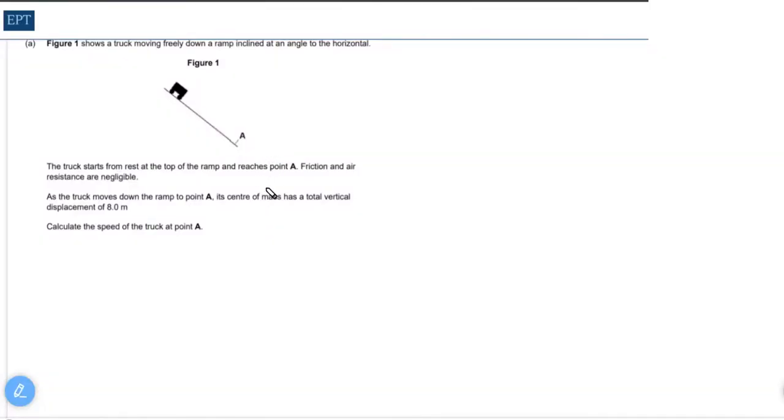In the first part of this question we have to find the speed of the truck as it hits point A at the bottom of a ramp. Now many of my students will try and do this using SUVAT and you probably could, but it's much quicker to do it considering energy changes. Think about the potential energy at the top turning into kinetic energy at the bottom.